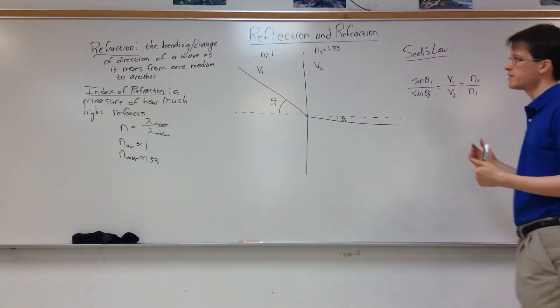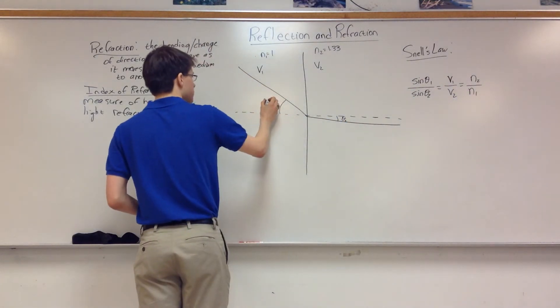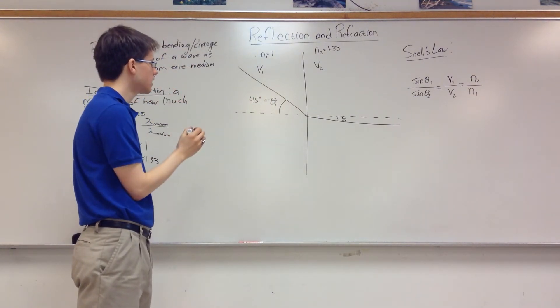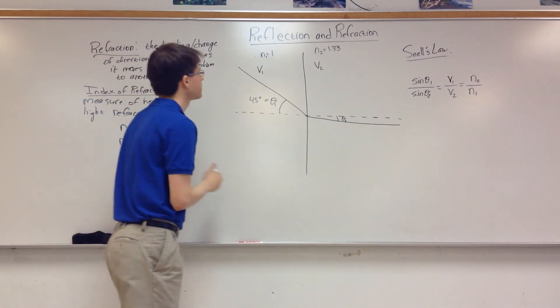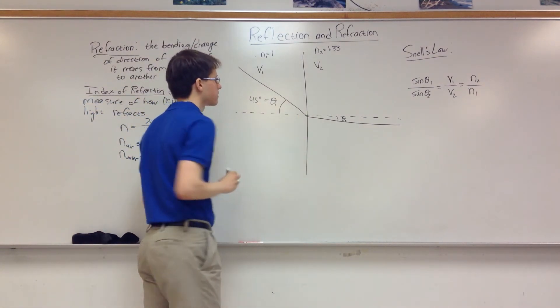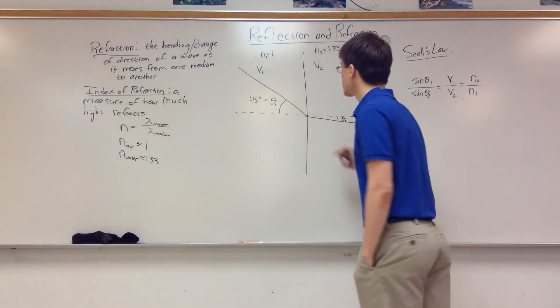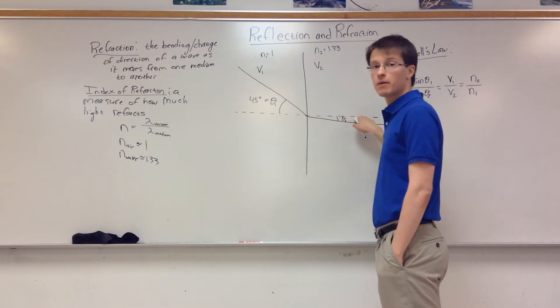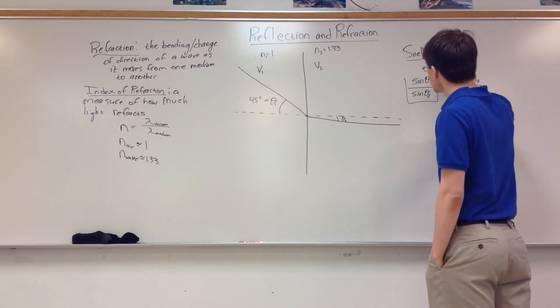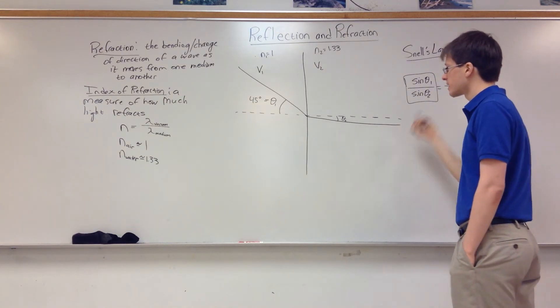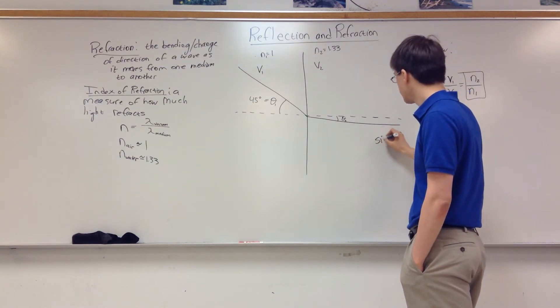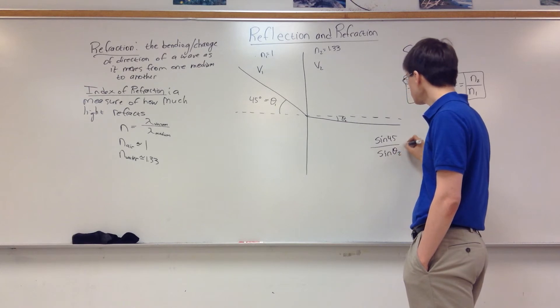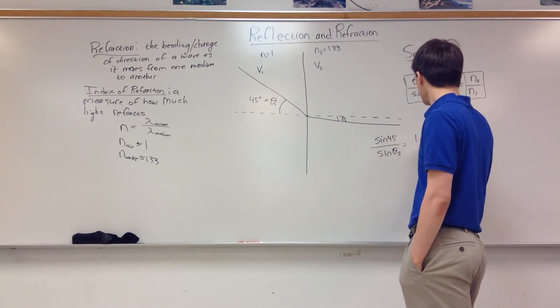And this is useful because now we can say, let's say I send in light at an angle of 45 degrees and I want to know what is the angle going to be over here. So we say okay, well I am given both indices of refraction and I have one of the angles I want the other angle. So I'm just going to pick the relevant parts of Snell's Law. I can say well I'm going to have sine of 45 divided by the sine of theta 2 is equal to 1.33 over 1.